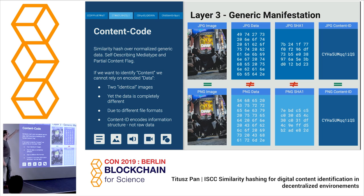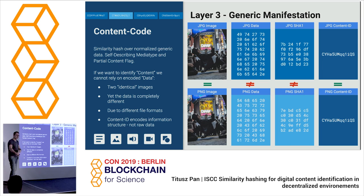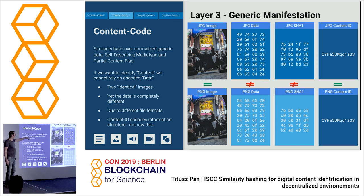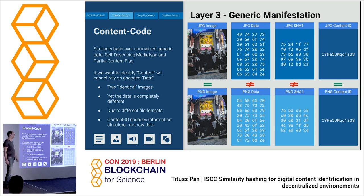The content identifier is media-type specific: you always identify image data, text data, video data, or audio data. We also have a mixed version where you can take different assets bundled in a multimedia document and create a compiled ISCC of mixed type. If you apply cryptographic hashing, different format versions of the same content will look very different, but with the content ID they collapse to the same result based on the syntactical structural content itself.